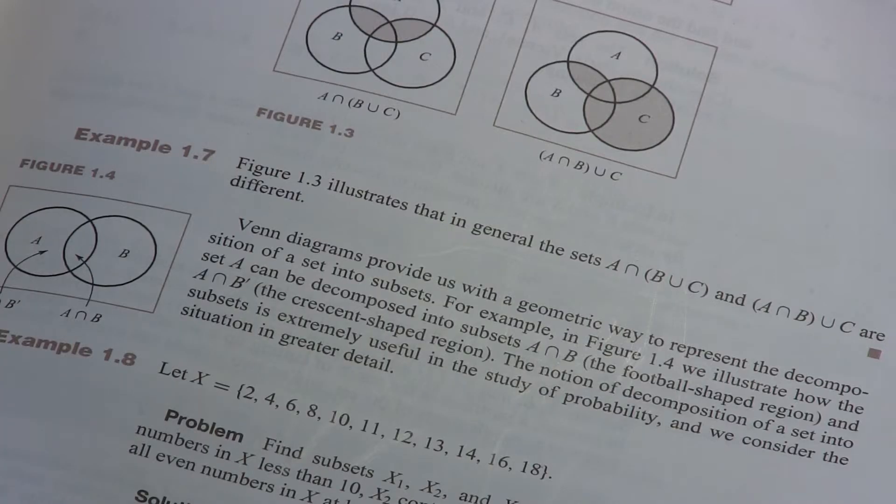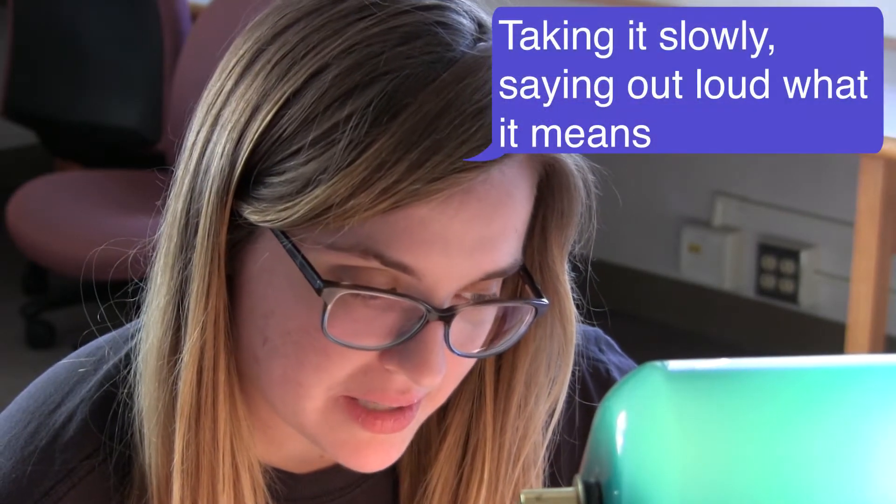Okay, so my goal is to try to figure out what's going on in this paragraph. So figure 1.4, Venn diagrams provide us with a geometric way to represent the decomposition of a set into subsets. Okay, so decomposition means breaking things apart.